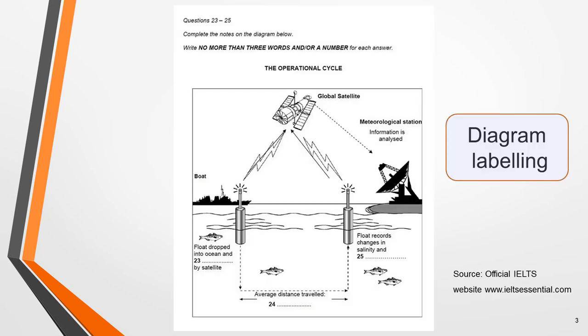In diagram labeling questions you'll be given a diagram of a process, an object, a structure, or a machine, and you must either fill in the missing labels or complete notes within the diagram. You could get almost any topic. Examples of diagrams from past papers have included a beehive, a soda can, a fire extinguisher, a ferris wheel, a zip fastener, a solar heating system, an undersea turbine, and soil layers. As long as you have a good strategy to follow, you'll be able to answer questions on any subject.